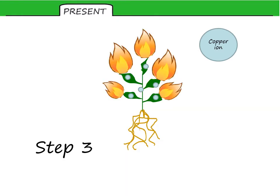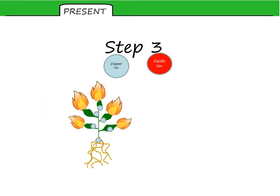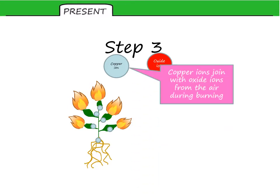Next, the plant containing the copper ions is burnt. When the plant is burnt, the copper ions in the plant react with oxygen in the air. And this forms copper oxide.